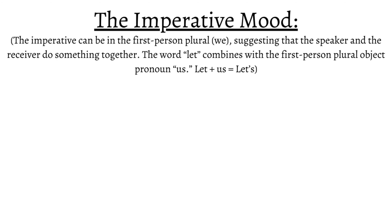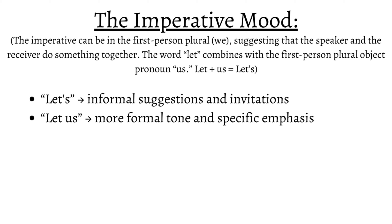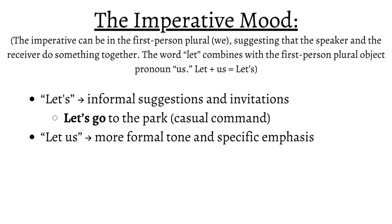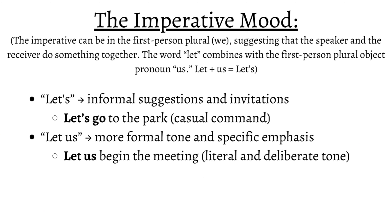The imperative can also be in the first person plural, which is the 'we' pronoun. This suggests that the speaker and the receiver do something together. They are expressed using a combination of the word 'let' and the first person plural object pronoun 'us.' Together, 'let us' makes 'let's,' but they differ in speech: 'let's' makes informal suggestions and invitations, while 'let us' has a more formal tone. For instance, 'let's go to the park' shows a casual command.